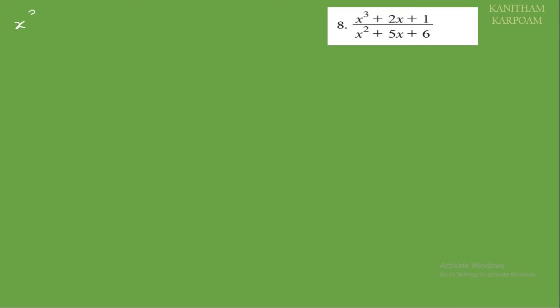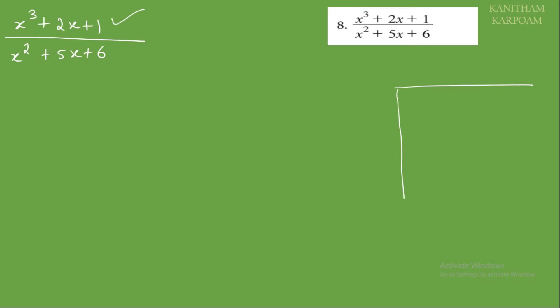Next, 8th sum: x cubed plus 2x plus 1 by x squared plus 5x plus 6. This follows the same method as the 7th sum. Since the numerator has x cubed but no x squared term, we write it as x cubed plus 0x squared plus 2x plus 1 divided by x squared plus 5x plus 6.